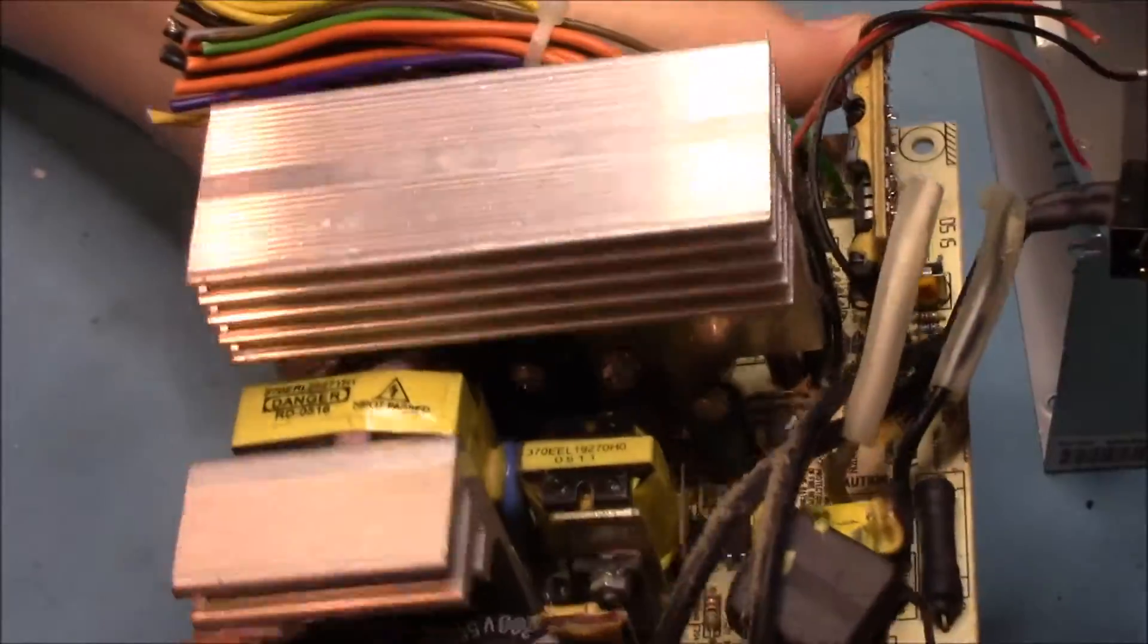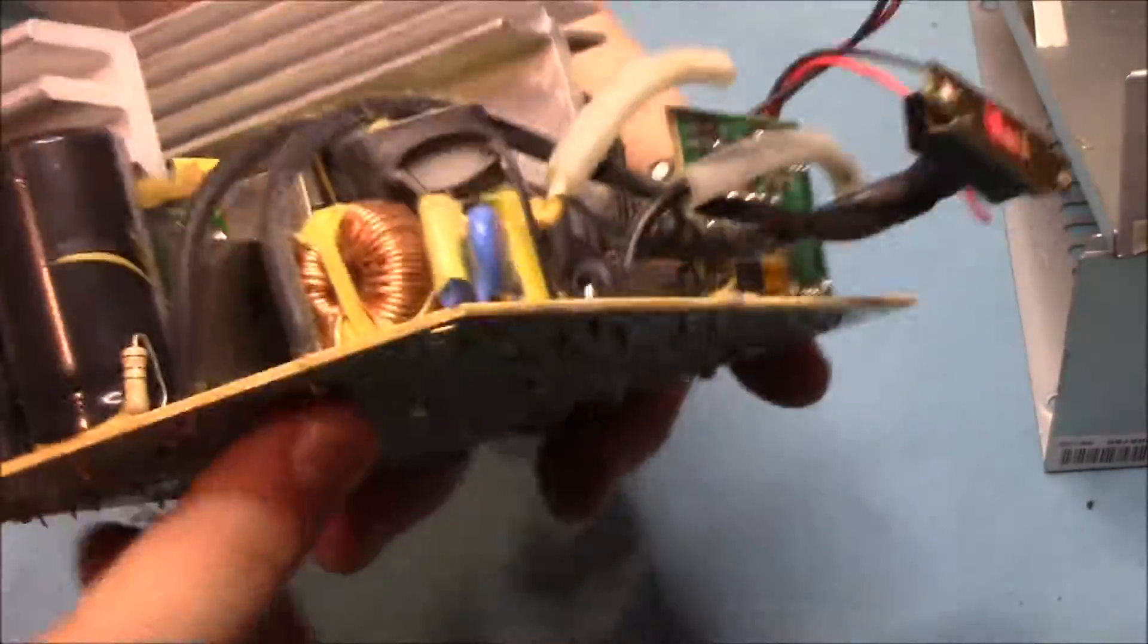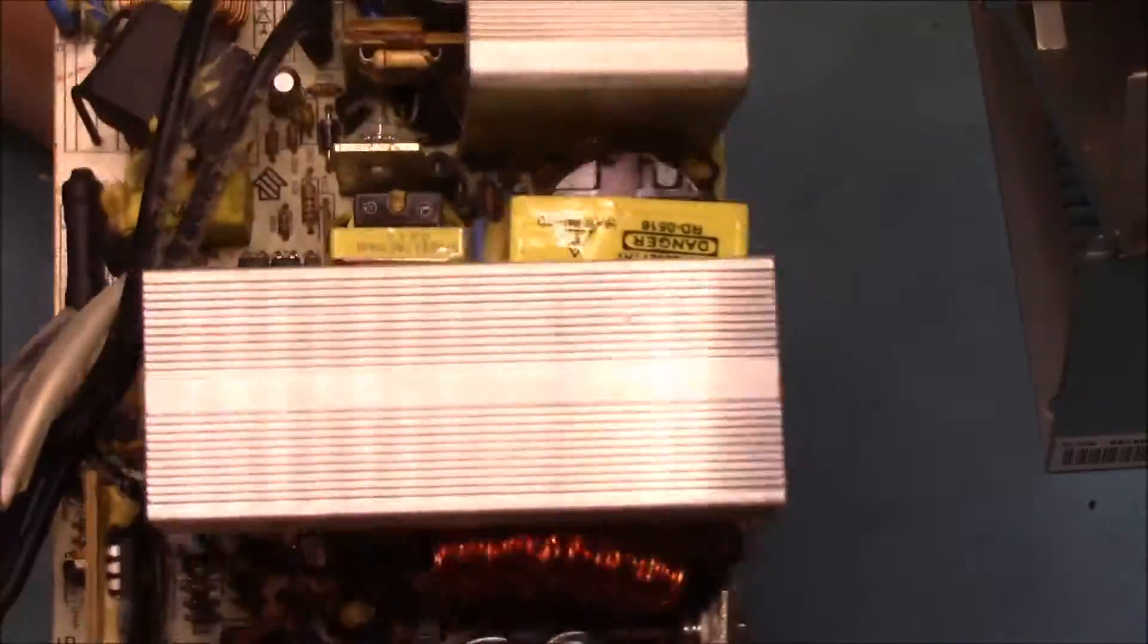And this is our power board. As you can see it has two large aluminum heat sinks as well as many large copper coils.